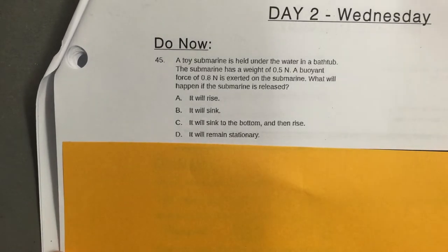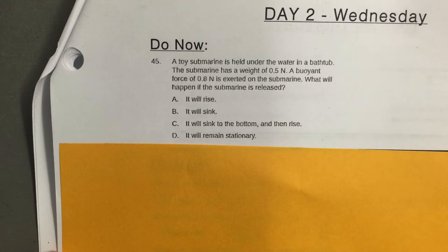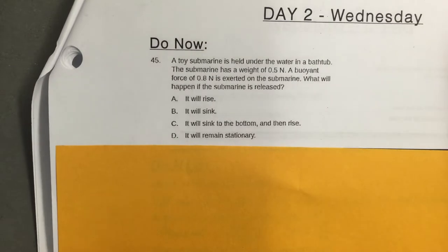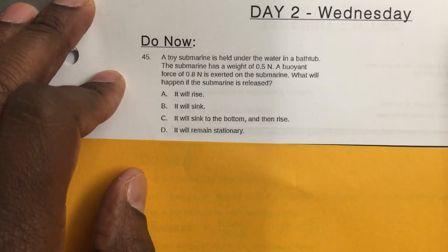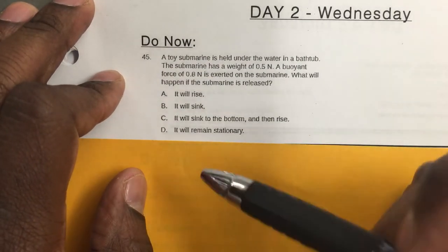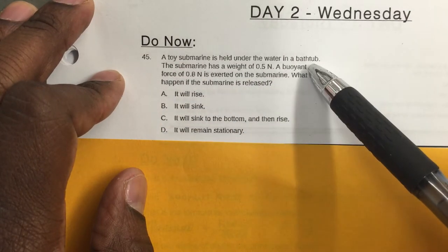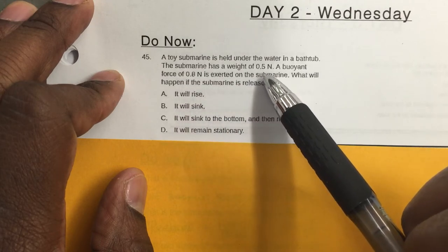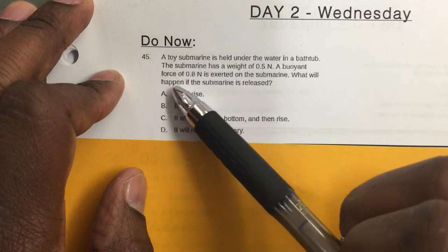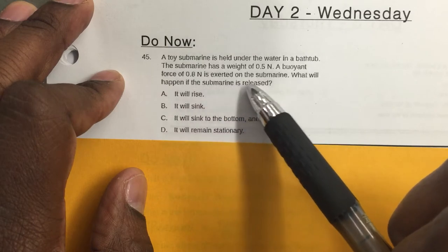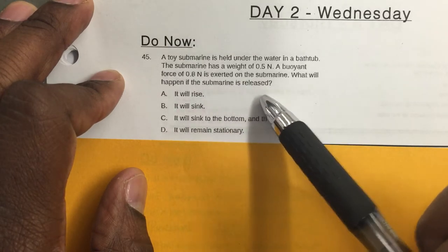All right students, it's Wednesday and today we're going to go over pressure and the buoyant force. This information can give students a little bit of trouble and we're going to go through it relatively quickly, so try to pay as close attention as possible. A toy submarine is held under the water in a bathtub. The submarine has a weight of 0.5 Newtons and a buoyant force of 0.8 Newtons exerted on it. What will happen if the submarine is released?